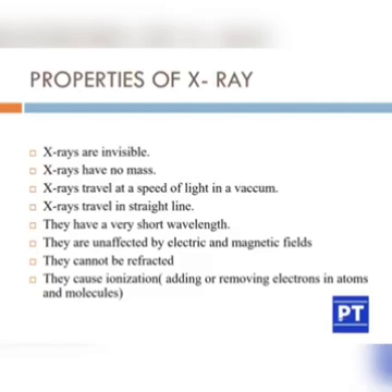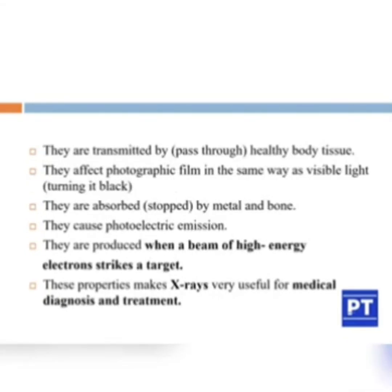X-rays cause ionization by adding or removing electrons in atoms and molecules. They are transmitted through — that is, passed through — healthy body tissues. They affect photographic film in the same way as visible light, turning it black. They are absorbed or stopped by metal and bone. They cause photoelectric emission.